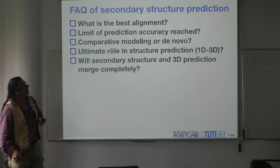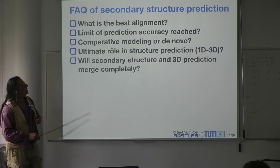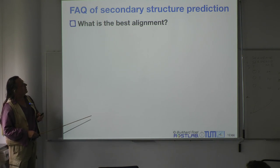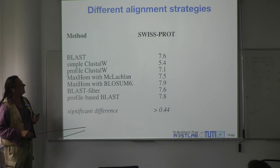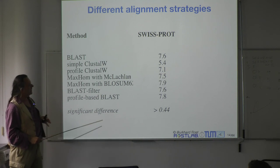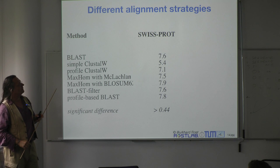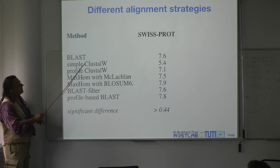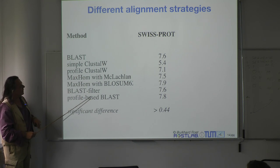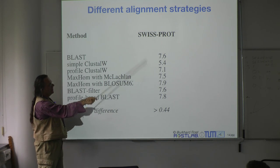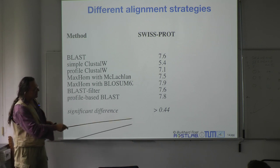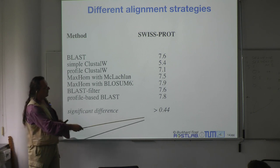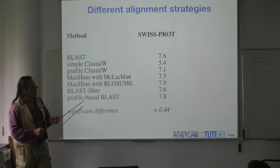Here I show data comparing different alignment methods — BLAST, ClustalW, profile ClustalW, dynamic programming with McLachlan and BLOSUM matrices, filtered BLAST, and PSI-BLAST — all tested against SwissProt (about half a million sequences). The metric is improvement over using no alignment information at all. A significant difference in this context would be about half a percentage point. The conclusion: there is very little difference between methods, and surprisingly PSI-BLAST and BLAST are very similar.